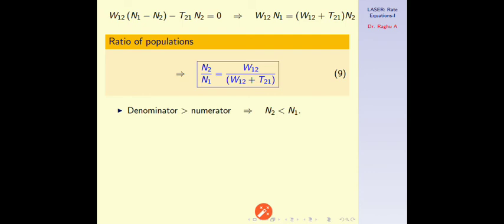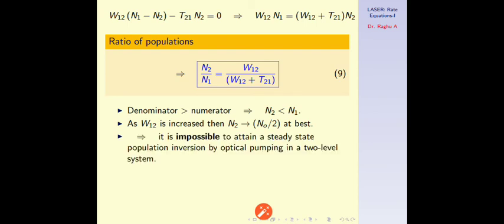If we increase the intensity of the radiation field, W12 will increase, and N2 can approach N0/2 at most — that is the best value that can be achieved. N2 can never be more than N0/2. This is the fundamental limitation of the 2-level system: it is impossible to attain a steady-state population inversion by optical pumping in a 2-level system. In other words, lasing is impossible in a 2-level system. Anyone wanting to build a laser must choose a system with more than 2 levels.